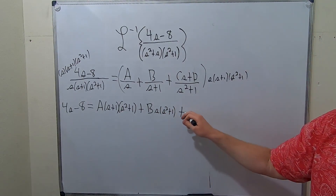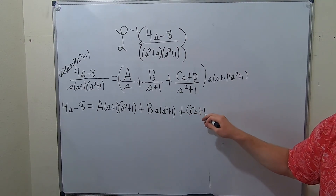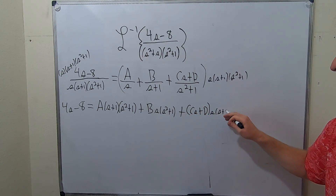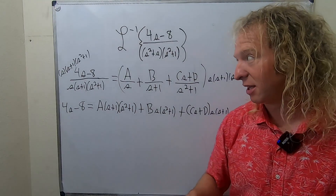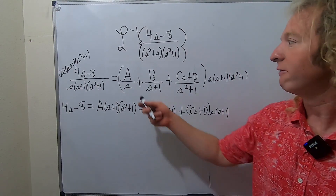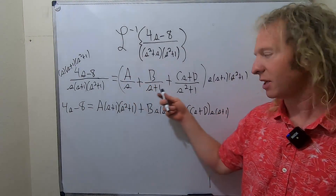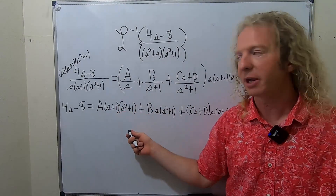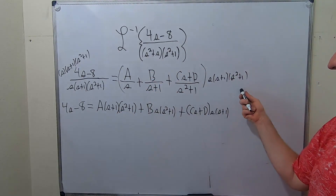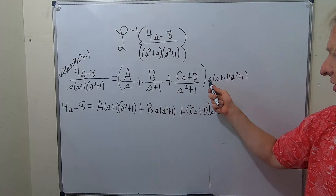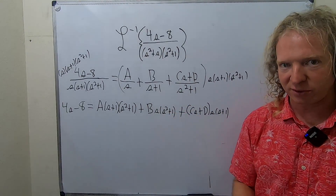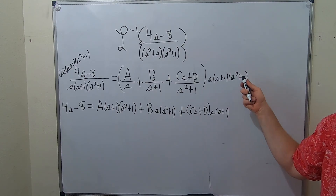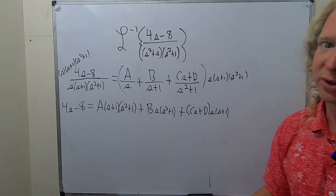Plus Cs plus D times s times s plus 1. Let me check that: this times this, the s cancels, leaving s plus 1 and s squared plus 1. This times this, s plus 1 cancels, leaving s and s squared plus 1. This times this, the quadratic cancels, leaving s times s plus 1. Looks good.